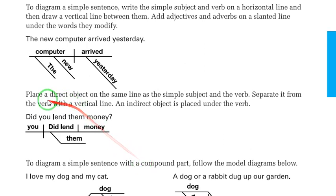As for when there's a direct object, place the direct object on the same line as the simple subject and the verb. Separate it from the verb with a vertical line. An indirect object is placed under the verb.